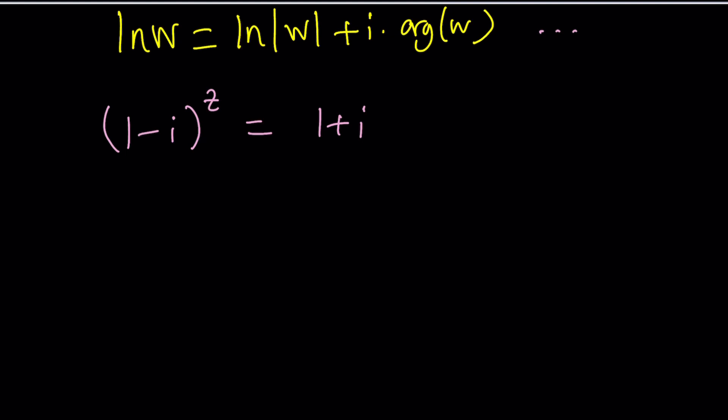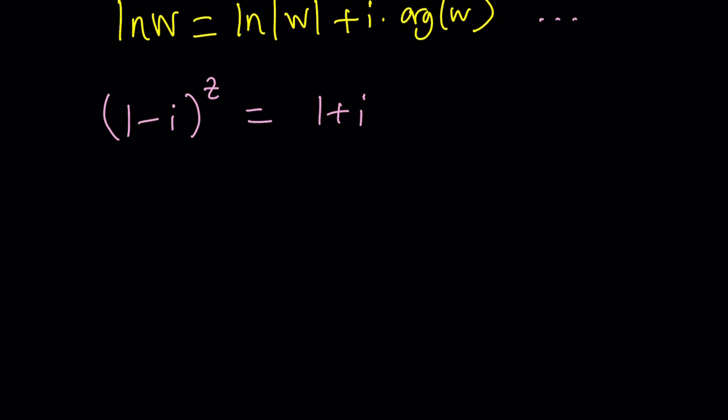Obviously, the answer isn't that straightforward because think about it. I can square 1 minus i, I get negative 2i. I can square 1 plus i, I get 2i. And then I can kind of make them agree at some point, right? If you raise it to higher powers, let's go ahead and give it a try real quick. I can just square this and then raise it to the power z and then I can square this.